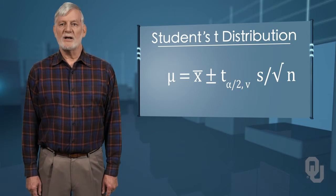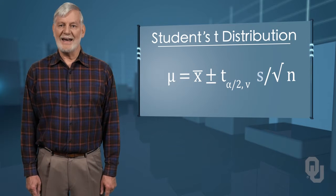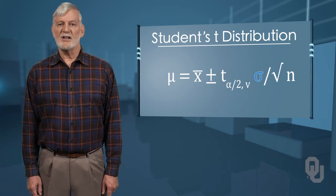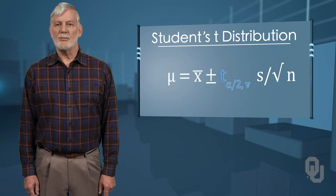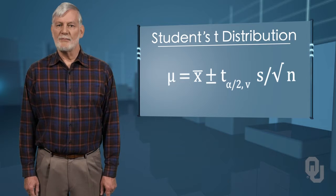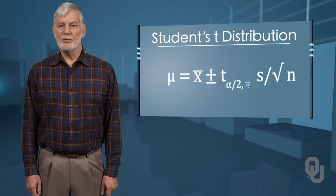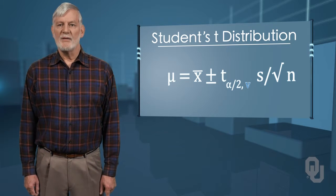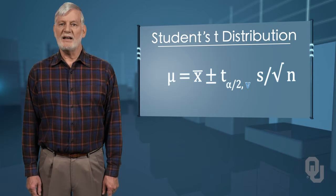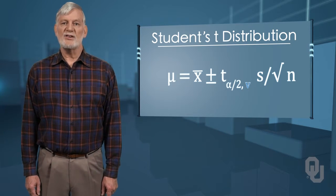Here the point estimate of the population standard deviation s has been substituted for the population standard deviation sigma, and t sub ν α has been substituted for z α. The Greek letter ν, that looks something like a v, is placed in the general formula in recognition that there are many t distributions, one for each sample size.